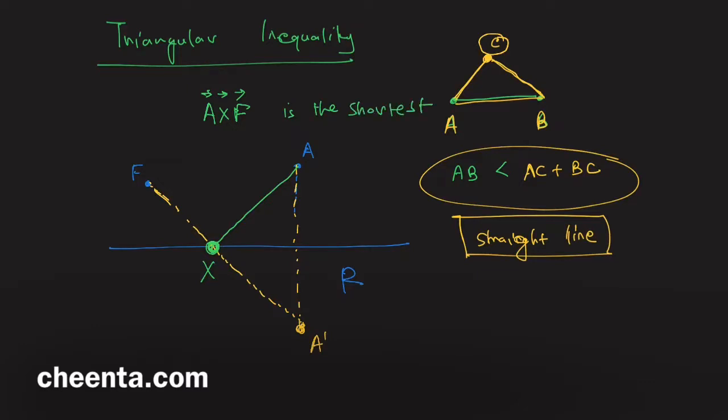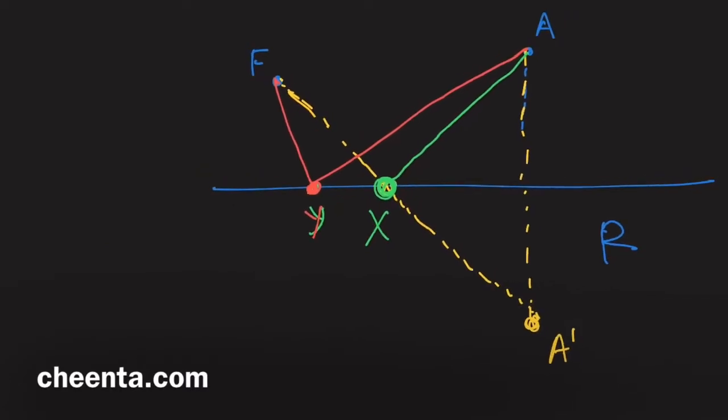Now why is that? If you pick any other point Y, let's pick this point Y and let's join F Y and A Y. We want to show that A Y plus F Y is larger than A X plus F X, right, because we chose Y arbitrarily.